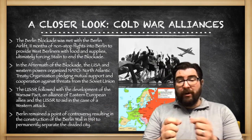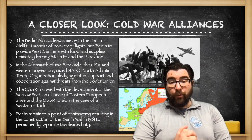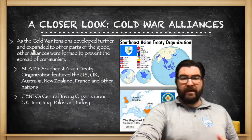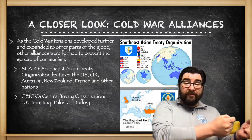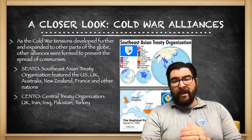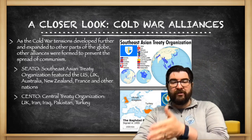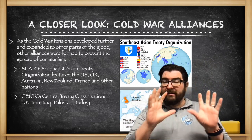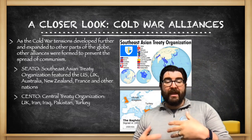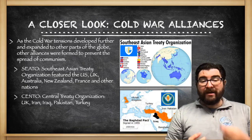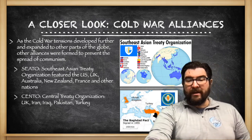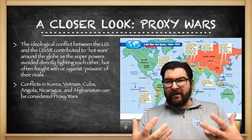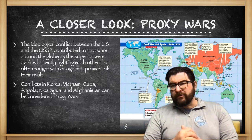Berlin remained a point of controversy, resulting in the construction of the Berlin Wall in 1961, which permanently separated the divided city and eliminated the ability for people to move from East Berlin into West Berlin. As Cold War tensions moved beyond Europe, other alliances formed to prevent the spread of communism. In Asia, SEATO, the Southeast Asian Treaty Organization, featured the US, UK, Australia, New Zealand, France, and other nations. CENTO, the Central Treaty Organization of the UK, Iran, Iraq, and Pakistan, covered Central Asia and the Middle East — both with the same goal of stopping communist expansion.